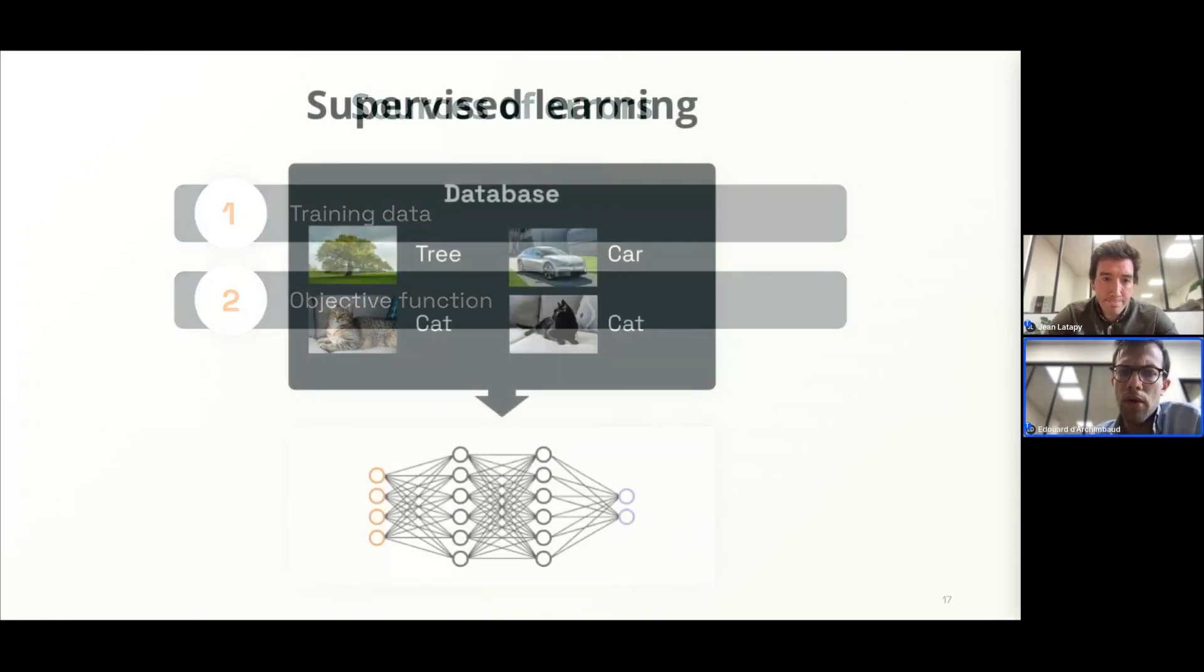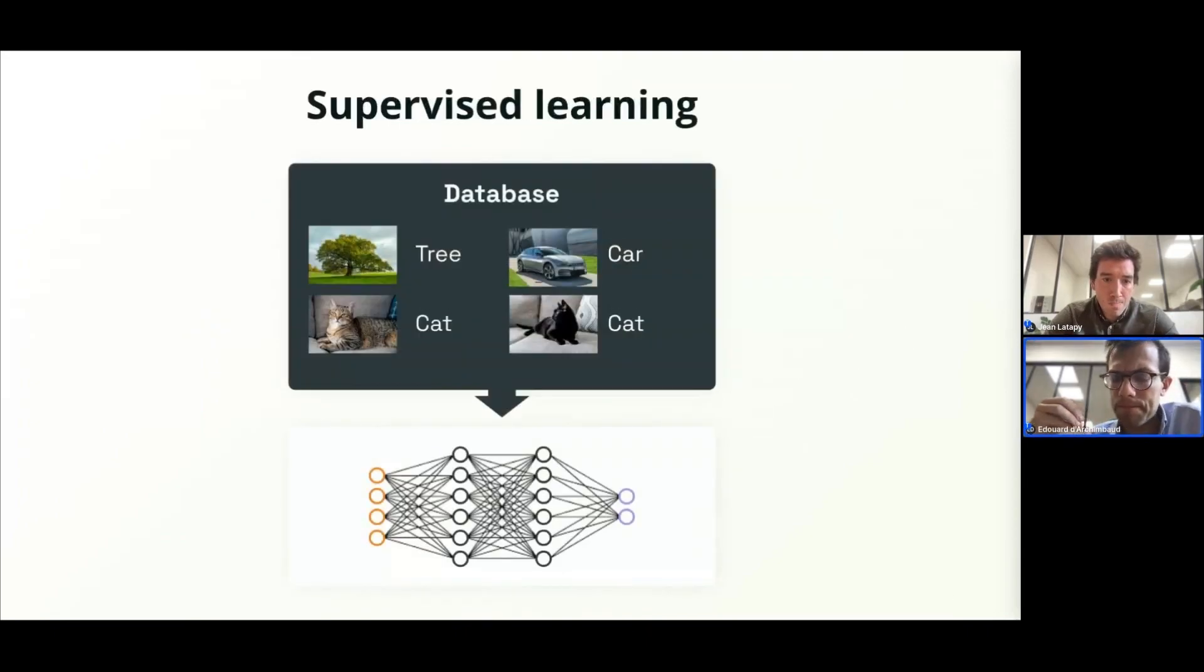As you all know, supervised learning works as follows. You have a model, you have a database of examples, and you progressively present those examples taken from this large database to the model. And during the training phase, the model adjusts its weights to maximize the number of correct answers.